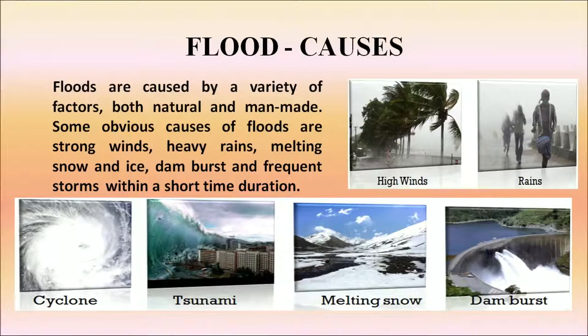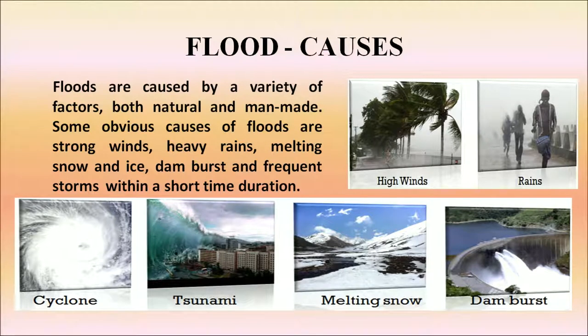Now we will take the first natural disaster: flood. Floods are caused by a variety of factors, both natural and manmade. Some obvious causes of floods are strong winds, heavy rains, melting snow, and frequent storms occurring within a short time duration.